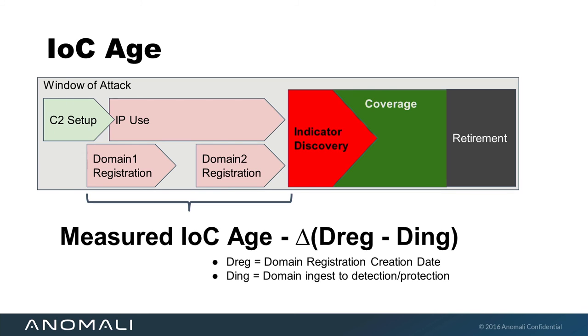Eventually the actors are going to be discovered, you're going to find those indicators, apply them to your detection and protection technologies, and at that point you've established coverage for that IOC. What I did was take the time between when domain names were registered to the time they were ingested into our threat intelligence platform when we discovered those indicators — that's the IOC age in my view. You can also do this with malware samples, where you take the PE build date as the established start of the malware hash, and then the ingestion date as when you discovered it.